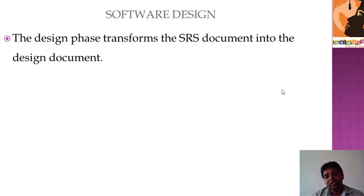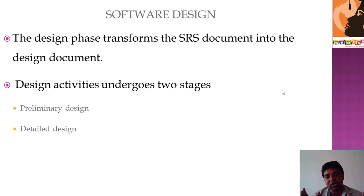Now for the second half of Unit 2 — software designing. Software designing is based upon the SRS document completed by the system analyst. The complete official document gets converted into a design document. The design document has two stages: preliminary designing and detailed designing. Preliminary design covers the starting stages where things are not fully defined, while detailed designing specifies the exact values of how the software should look.